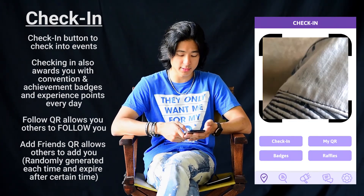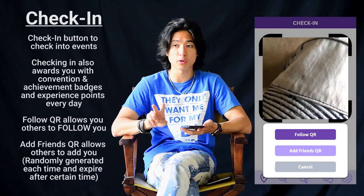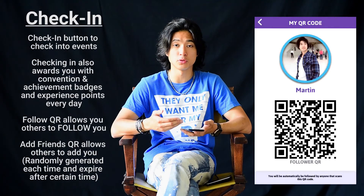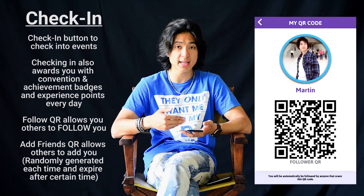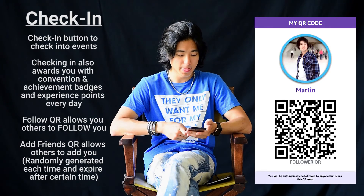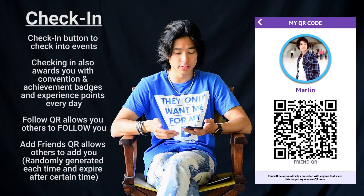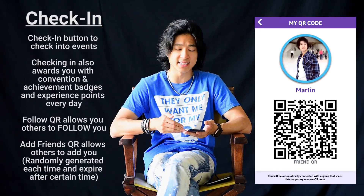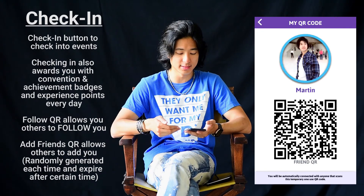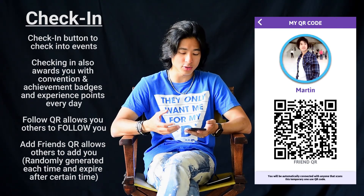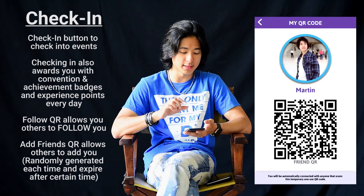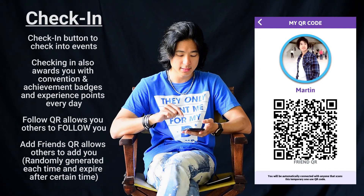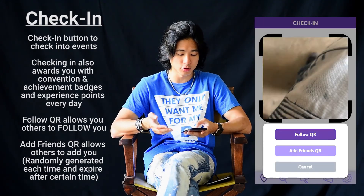Now let's get into the QR code section. There are two types of QR code that you can release. One is the follow QR — this QR code will allow people to follow you. As soon as they scan it, they will follow you and vice versa. You can also have an add friends QR. If you give someone this QR code and they scan it, they will automatically be added to you as a friend. Since we're so concerned about privacy, we have made sure that this QR code is randomly generated every single time you create it, and it will expire after a certain period of time.